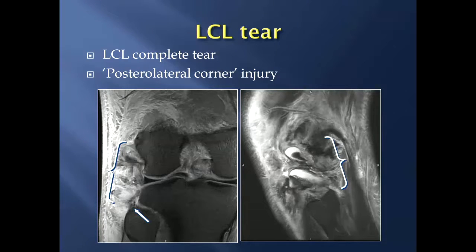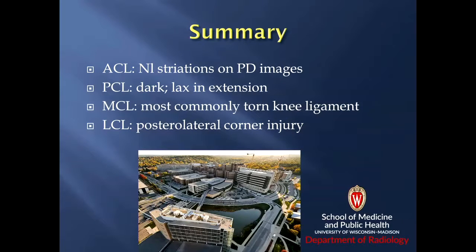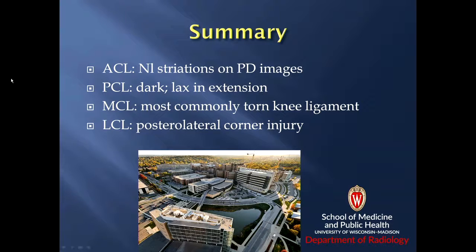When there is an injury to the fibular collateral ligament, it is often called a posterolateral corner injury, which can involve small ligaments as well. The most concerning to orthopedic surgeons is the popliteofibular ligament, which often needs to be reconstructed or repaired in severe cases. In summary, there are four main knee ligaments: the ACL with normal striations on proton density images; the PCL which is low signal and lax in extension; the MCL which is the most commonly torn ligament with grade 1 sprains very common; and the LCL, where a complete tear indicates posterolateral corner injury requiring evaluation of adjacent structures.